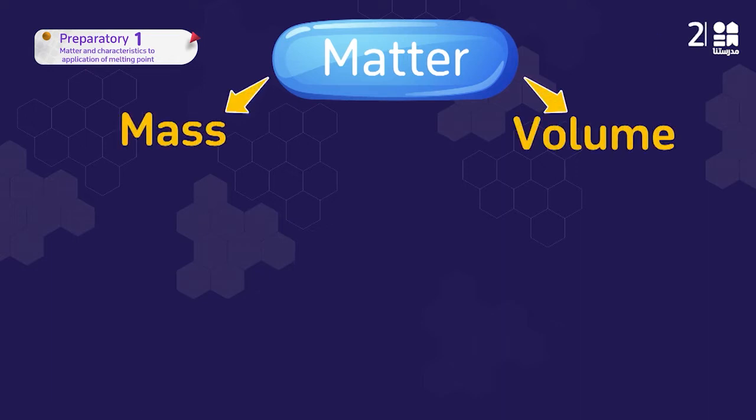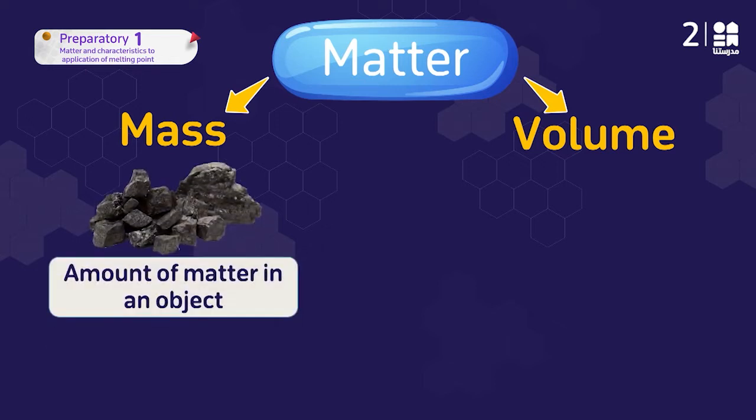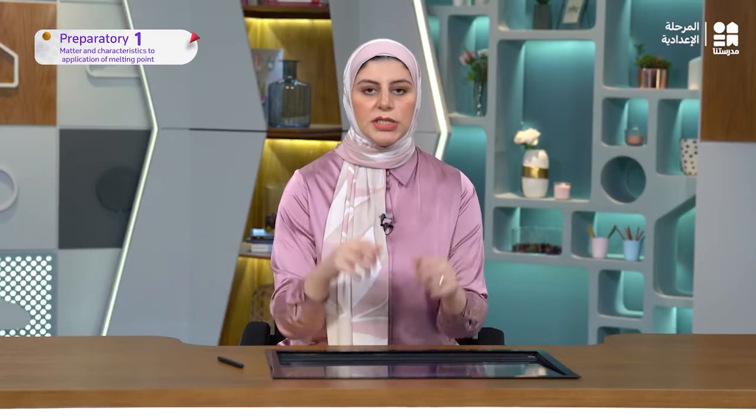So what's meant by mass? Can you tell me? The mass is the amount of matter in an object — the amount of matter in an object. So if you have a bag and the bag has many books inside, the mass of the bag is the amount of matter inside the bag.